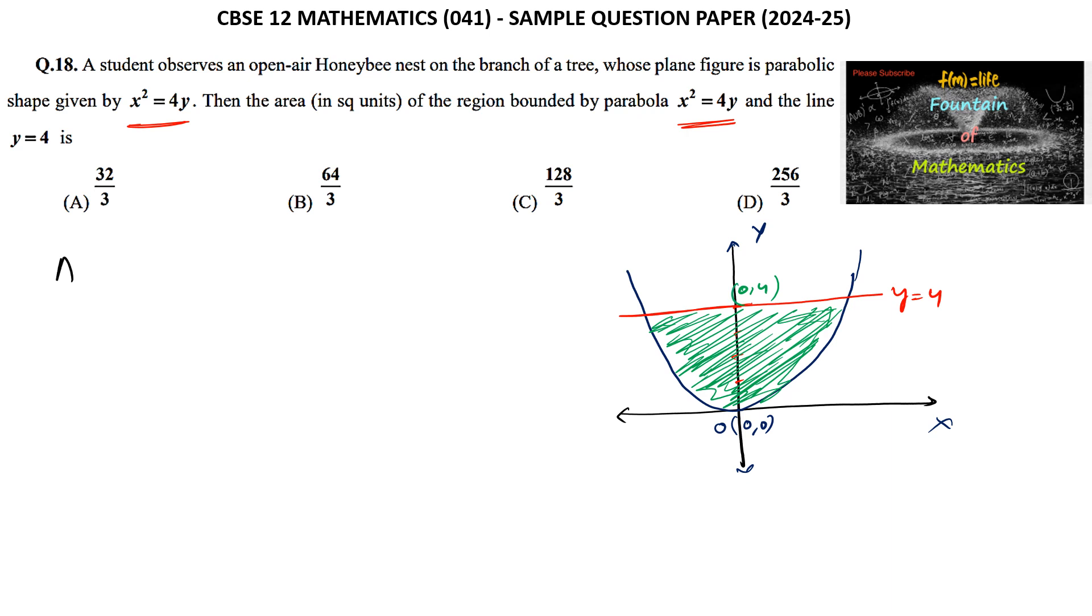We can write by using integrals, area of the required region which is equal to 2 times the integral. Let us consider along the y-axis from 0 to 4 and the curve. Here x² = 4y, or we can write x = √(4y), that is 2√y.